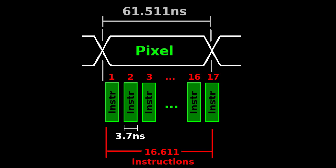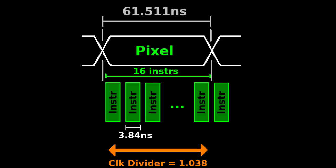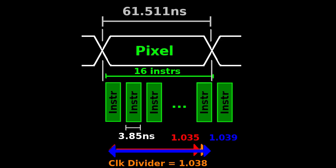Luckily, the PICO's PIOs have some clock divider circuitry. So if we write a 16-instruction sampling loop that takes 59.248 ns, then we need a clock divider of 1.038. The problem is that the PIO clock divider's fractional part has an 8-bit resolution — it can only divide with a granularity of about 0.004. So in our case, the divider won't be 1.038, but instead 1.035 or 1.039.